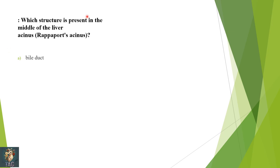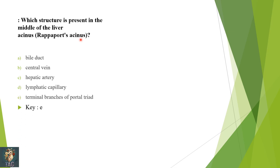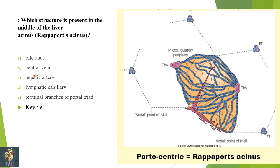Next: which structure is present in the middle of the acinus of Rappaport — bile duct, central vein, hepatic artery, lymphatic capillary, or terminal branches of the portal triad? The acinus of Rappaport is a diamond-shaped area with a short axis formed by anastomosing branches of the terminal portal triad and a long axis formed by the central vein (terminal hepatic venule). The terminal branches of the portal triad are present in the center of the acinus of Rappaport.